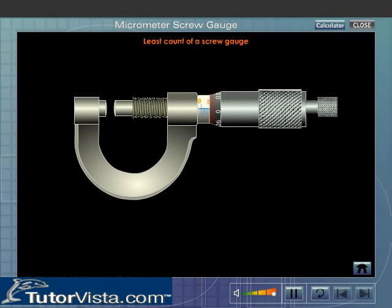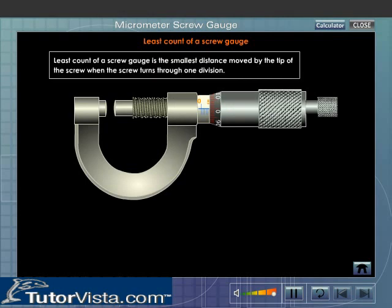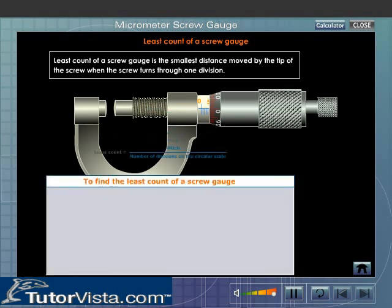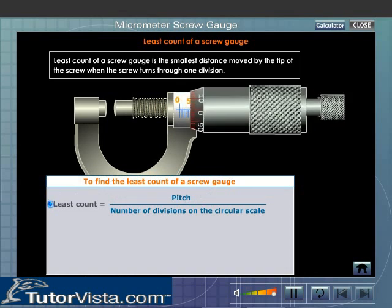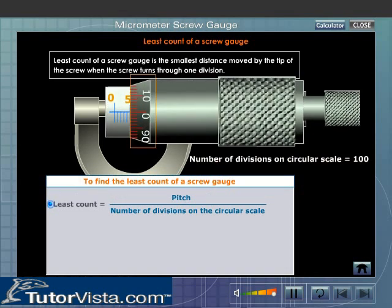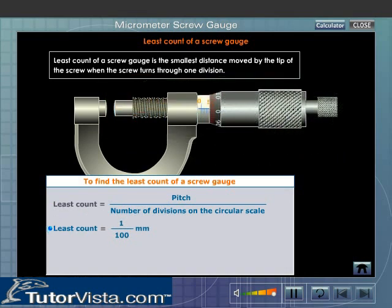Least count of a screw gauge. Least count of a screw gauge is the smallest distance moved by the tip of the screw when the screw turns through one division. Least count is equal to pitch by number of divisions on the circular scale. Least count is equal to 1 by 100. That is equal to 0.01 mm.